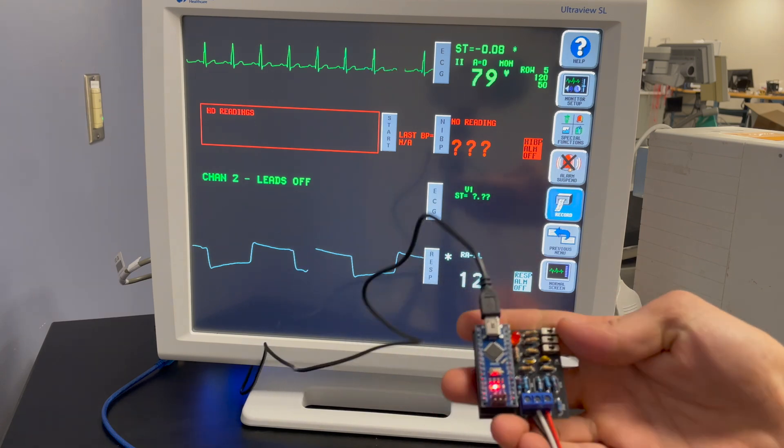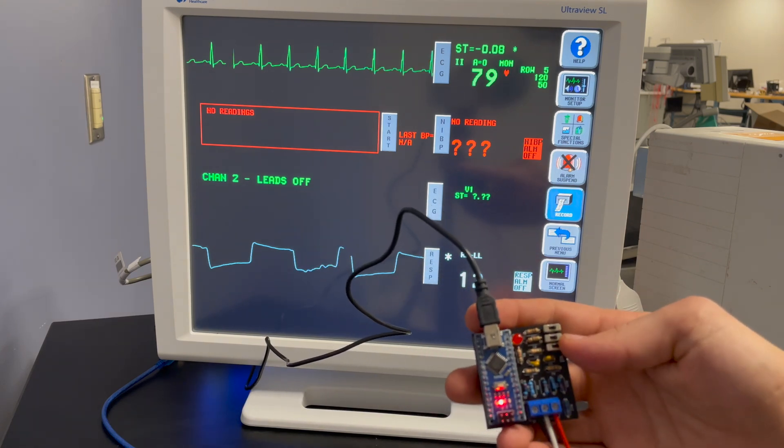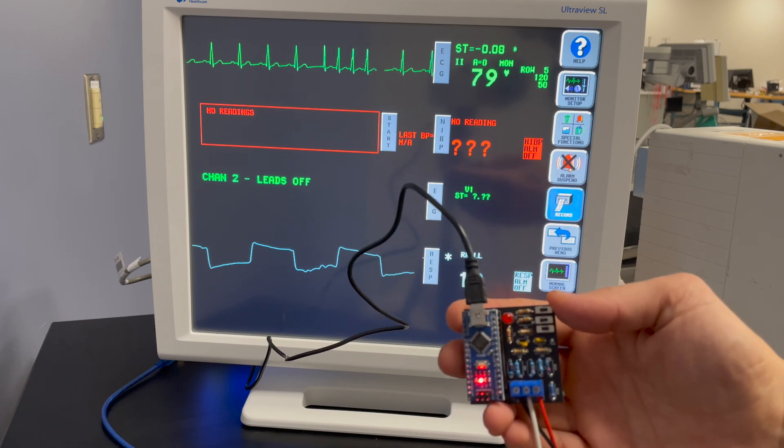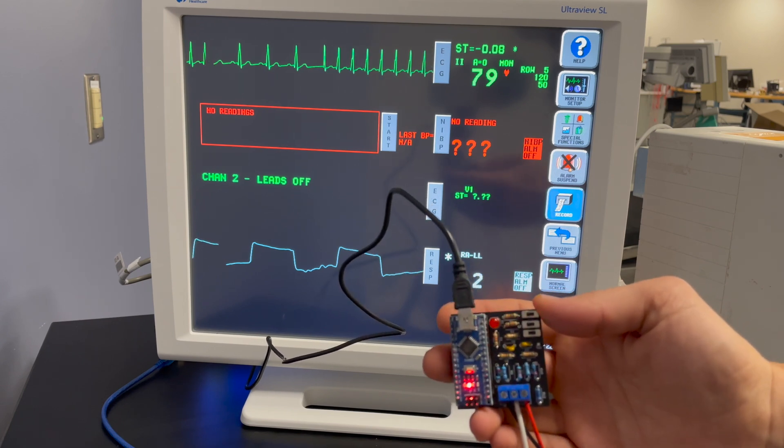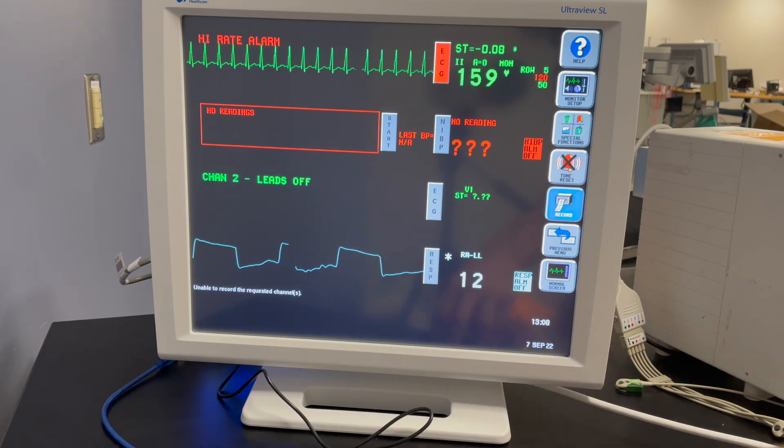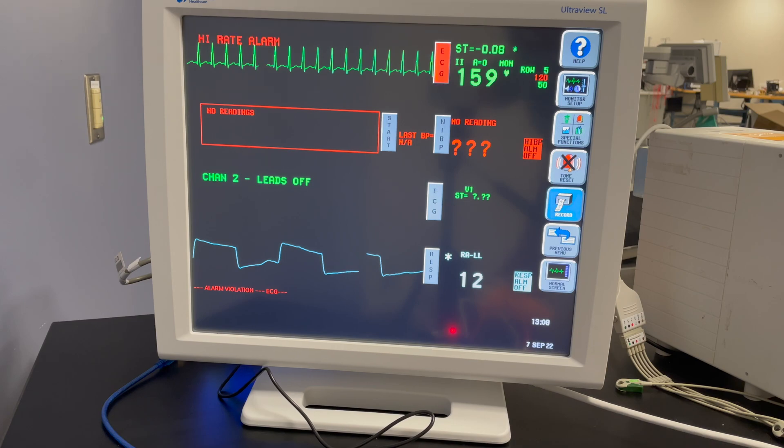If we go to our patient simulator, I'm going to flip the first two toggle switches over to the left. That's going to increase our ECG waveform to around 160 beats per minute, and you can see that the high rate alarm goes off successfully.